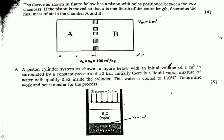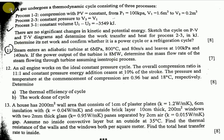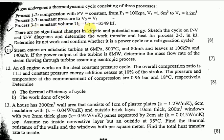Question number ten: a gas undergoes a thermodynamic cycle consisting of three processes. Process 1-2: compression with PV constant, from P1 = 100 kPa, V1 = 1.6 cubic meters to V2 = 0.2 cubic meters. Process 2-3: constant pressure, V3 = V1. Process 3-1: constant volume. The difference in internal energy U1 - U3 = -3549 kJ. Sketch the cycle on PV diagram and determine work transfer and heat for process 2-3, net work, and confirm if it is a power cycle or refrigeration cycle.